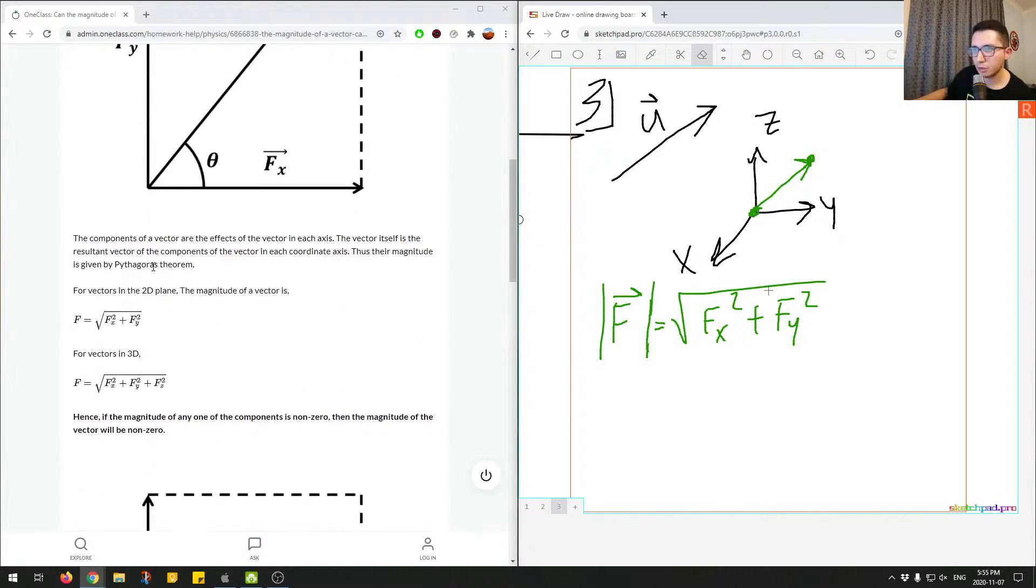And then goes on to say the components of a vector are the effects of the vector in each axis, and so on. So this is the equation for the magnitude, and even in the 3D system, same idea. If at least one of these has a value, you'll always have a vector that has a magnitude.